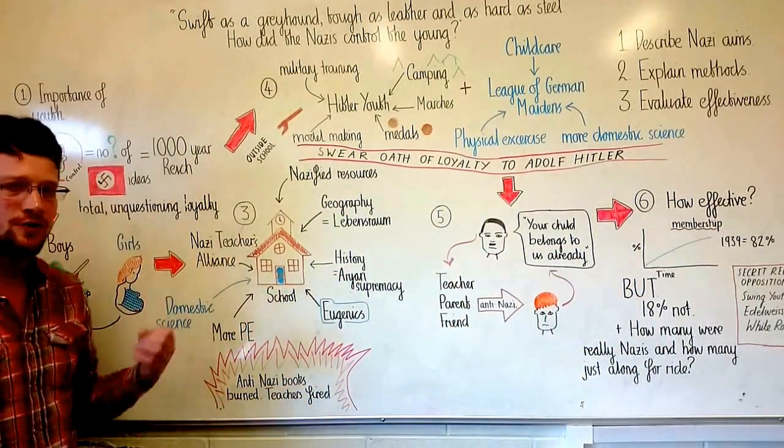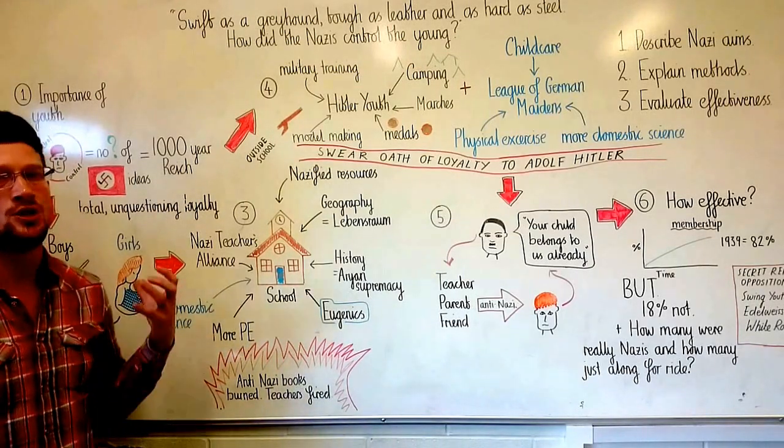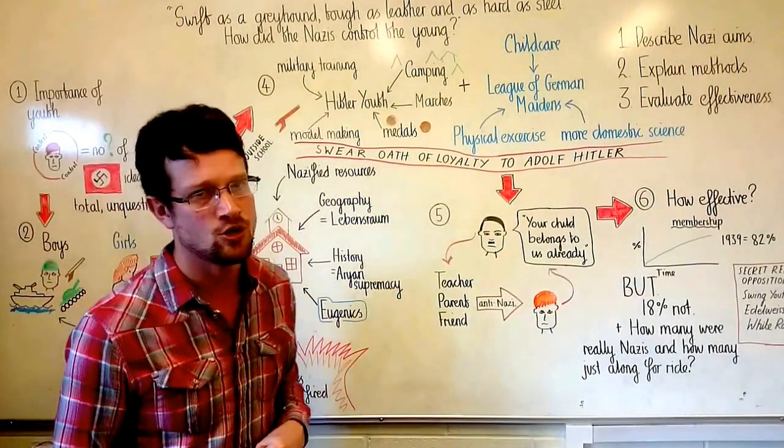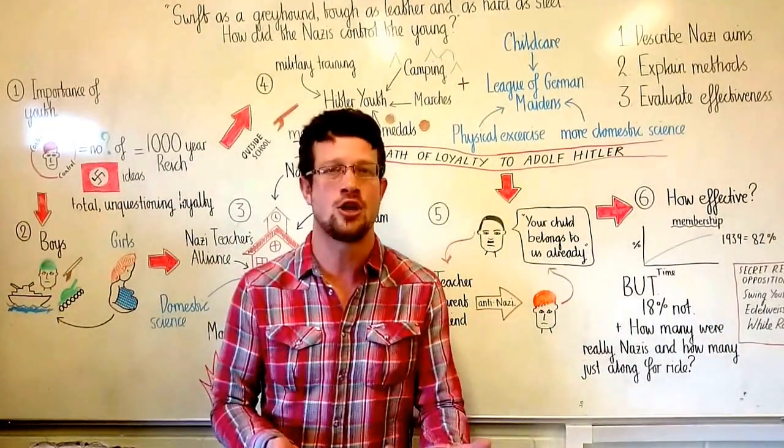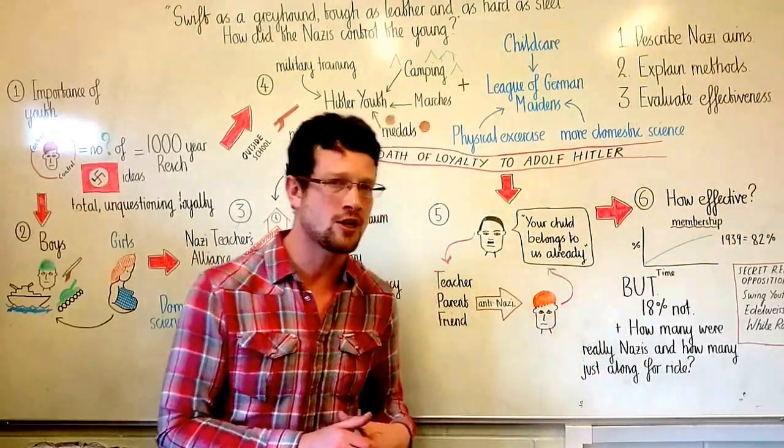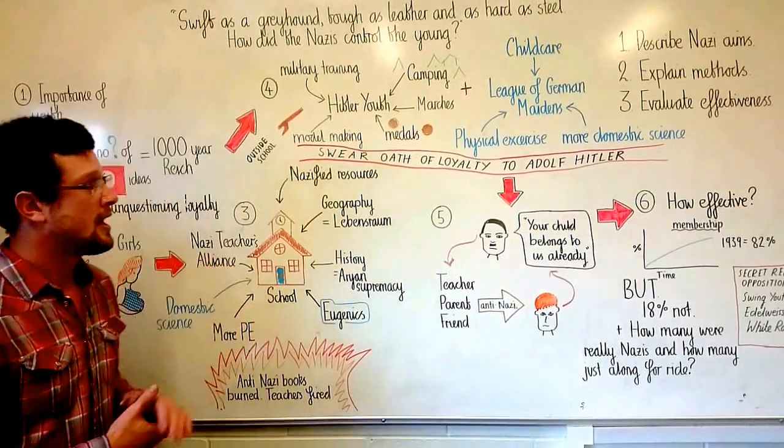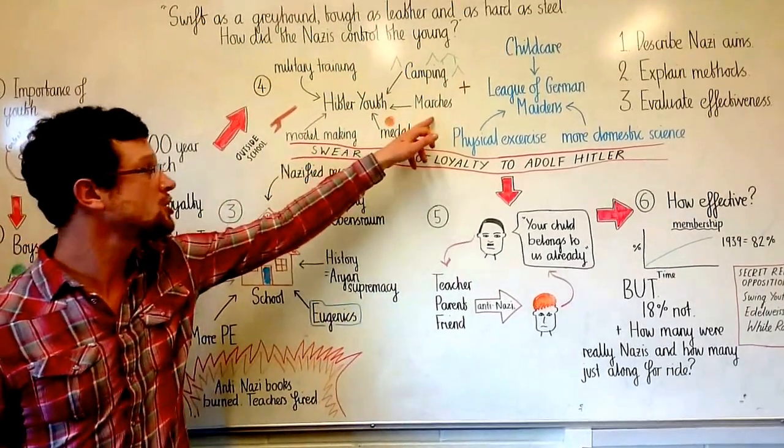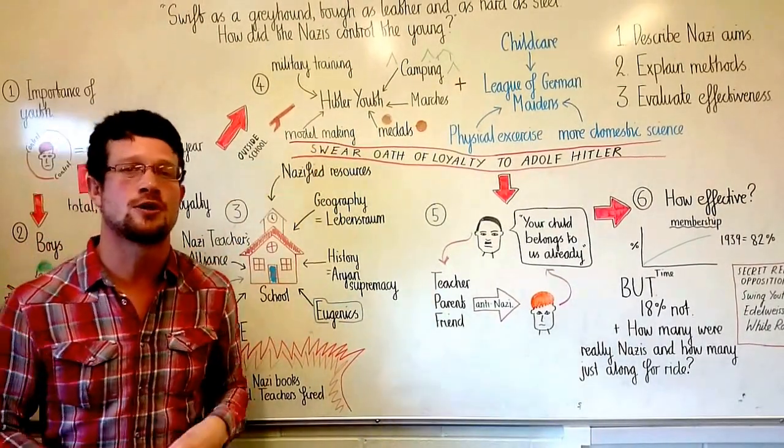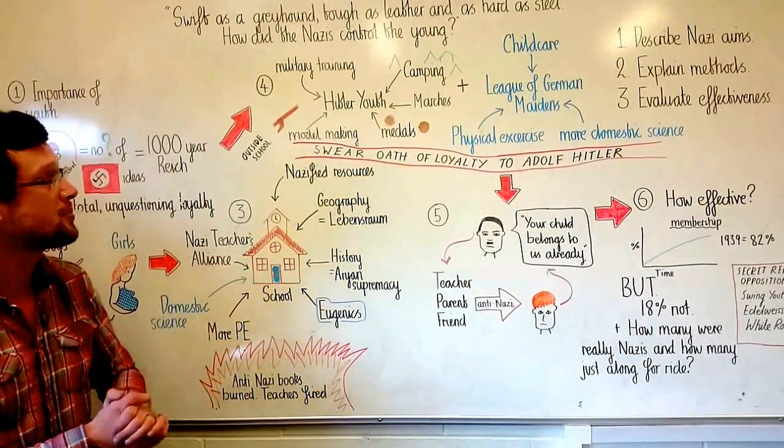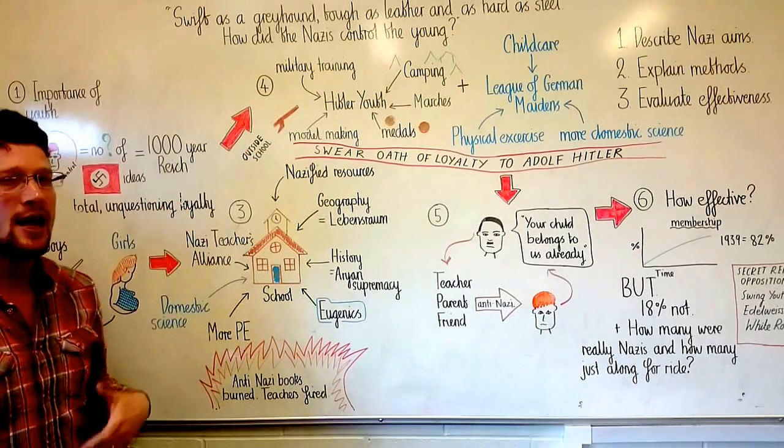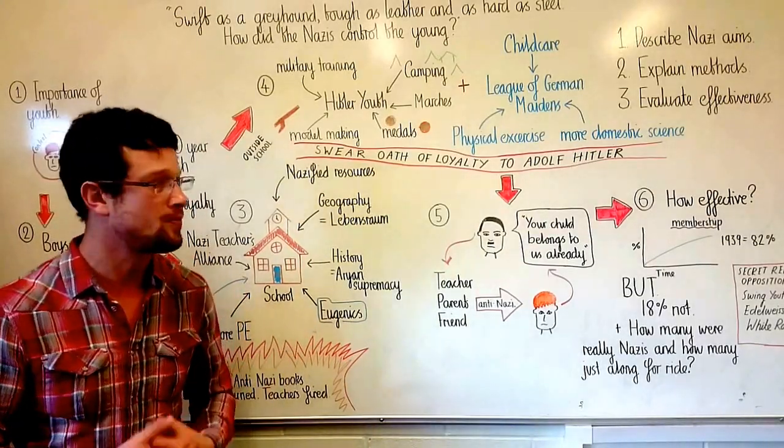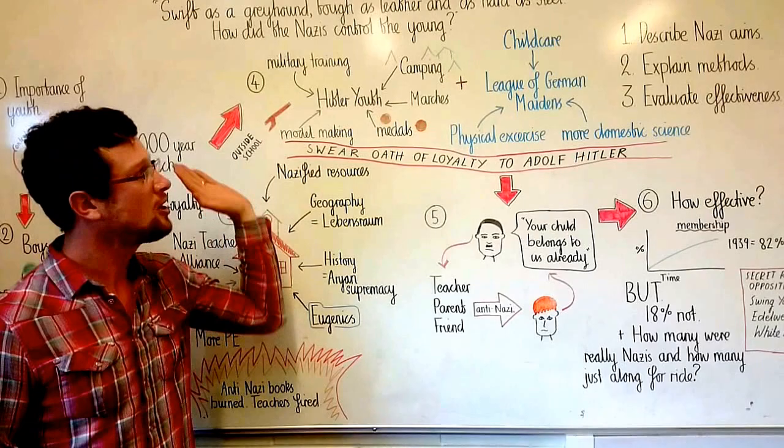The Nazis realized that the amount of time that children were in school was not sufficient to completely indoctrinate and control them. So they took advantage of a long-standing German tradition of extracurricular youth clubs and set up two of their own. The first of these for boys was called the Hitler Youth. At school in the Hitler Youth, boys would take part in camping, long-distance marches, model making where they would make models of things like guns, tanks, airplanes, and ships, and extensive military training. If you showed exceptional physical prowess or if you showed exceptional bravery, you would be awarded medals.